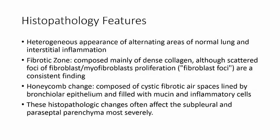Looking at the histopathological features of IPF, you'll see alternating areas of normal lung and interstitial inflammation, plus a fibrotic zone composed of dense collagen surrounded by fibroblasts and myofibroblasts, which lay down this dense collagen, causing dense fibrosis. You also see honeycombing, which is airways filled with dense collagen, mucin, and inflammatory cells. These histopathological changes primarily affect the subpleural and peribronchovascular parenchyma, where they are most severe.